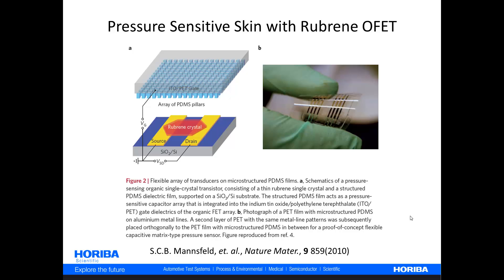One of the compounds frequently used is rubrene. In this diagram, it's helpful that the authors show a rubrene crystal as the active medium in their transistor. The important characteristics such as electron and hole mobilities are highly dependent upon the solid-state structure. It turns out that those electron and hole mobilities are highest in crystalline materials, and not just polycrystalline, but single crystalline materials, and along specific crystalline axes.